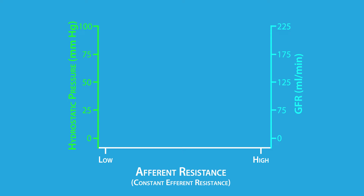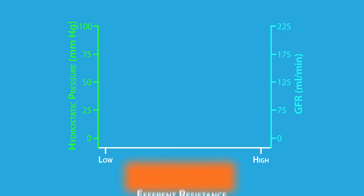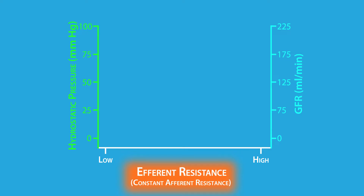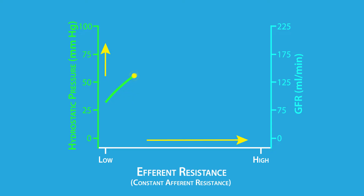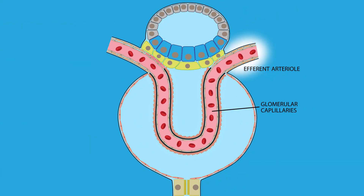Let's now examine what happens to GFR when efferent resistance is changed while afferent resistance is kept constant. A typical efferent resistance corresponds to a hydrostatic pressure of about 50 mmHg. As efferent resistance is decreased, hydrostatic pressure decreases, and as efferent resistance is increased, hydrostatic pressure increases. This makes sense because the efferent arteriole is downstream of the glomerular capillary.